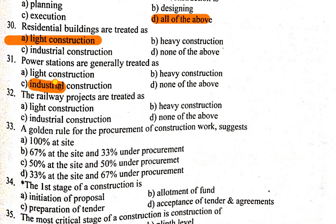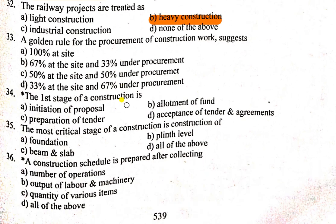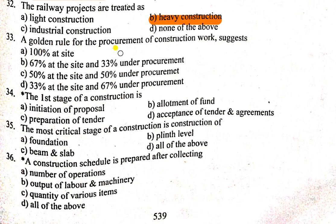A golden rule for the procurement of construction work suggests that in any construction site, 67% of the material and resources are on site and 33% are under procurement. So the correct answer is option B: 67% is on site and 33% is under procurement.